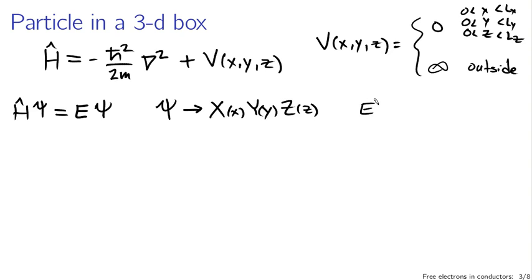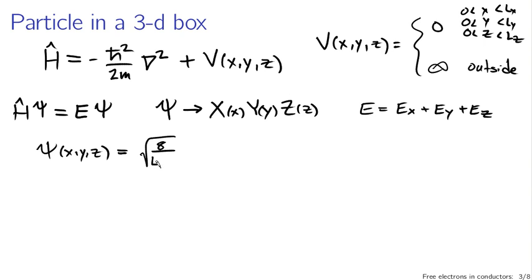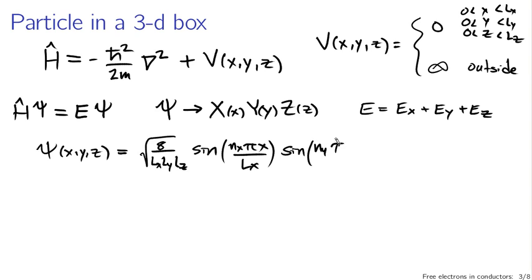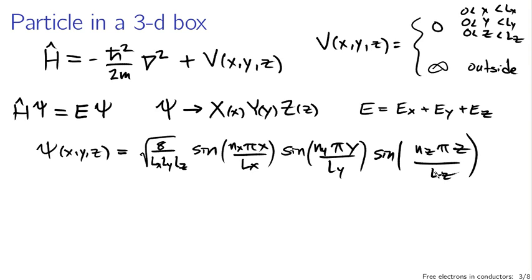The overall energy after separation of variables is given by the energy contributed by the x, y, and z independent one-dimensional particles in a box. The wave functions are products of three one-dimensional solutions. The normalization is the square root of 8 divided by Lx Ly Lz, and then you have sine functions: sine of (nx pi x / Lx) times sine of (ny pi y / Ly) times sine of (nz pi z / Lz), where nx, ny, nz are quantum numbers. That's the wave function for a single particle in a three-dimensional box.